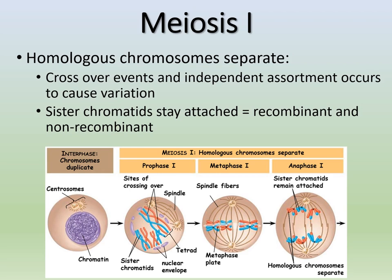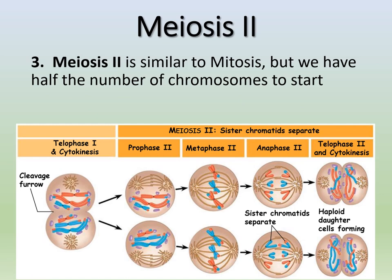To summarize meiosis I: homologous chromosomes separate; crossover events and independent assortment cause variation; sister chromatids — now recombinant and non-recombinant — stay attached. We now have two haploid daughter cells. Then we undergo meiosis II, which is very similar to mitosis, except we have half the number of chromosomes. In meiosis II we separate the sister chromatids, going through prophase, metaphase, anaphase, and telophase again. At the end we have four haploid daughter cells.